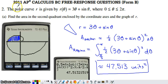This is problem number 2 from the 2011 BC exam, form B. It's a calculator question that involves polar curves. The polar curve r is given by r(θ) = 3θ + sin θ, where 0 ≤ θ ≤ 2π.